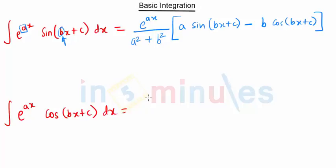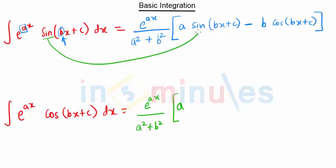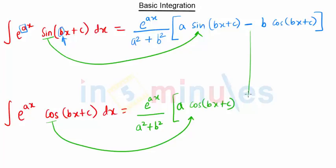Similarly, on the same line we have the formula for cosine: e raised to ax upon a square plus b square, into a. Here we started with cosine, so first we have cos of bx plus c, and instead of minus we will have plus b times sine of bx plus c. This is the basic result you should remember.